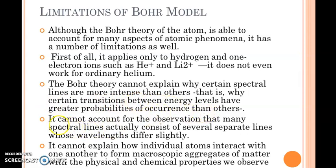The third limitation is that the Bohr model cannot explain the fine structure. That means it cannot account for the observation that many spectral lines actually consist of several separate lines whose wavelengths differ slightly. When you use a spectrometer, there are actually two or more lines having very small difference in wavelength. It cannot explain the fine structure.